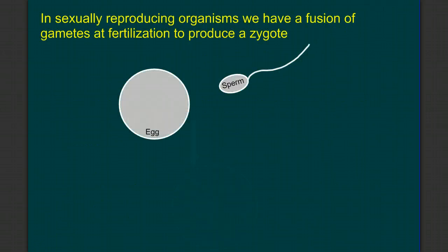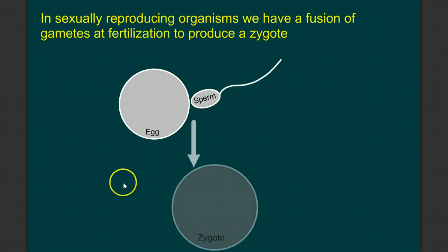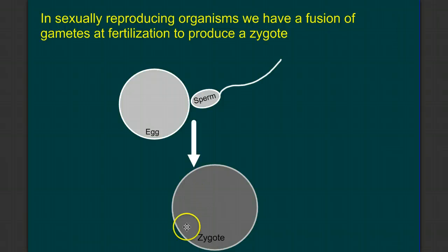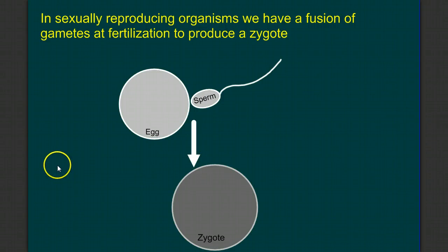In sexually reproducing organisms, we have a fusion of gametes at fertilization to produce a zygote. So two parents give rise to one offspring. So the question is, where do these gametes — the sperm and egg — that we're going to use for sexual reproduction, where do they come from? By what process are they made?